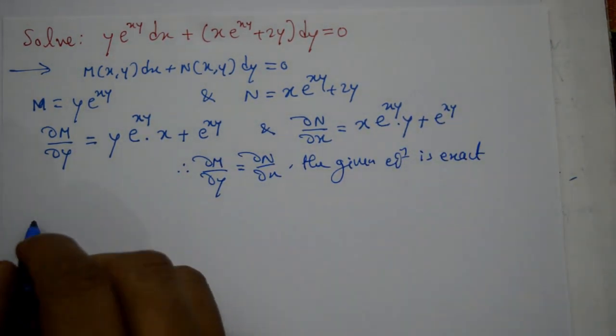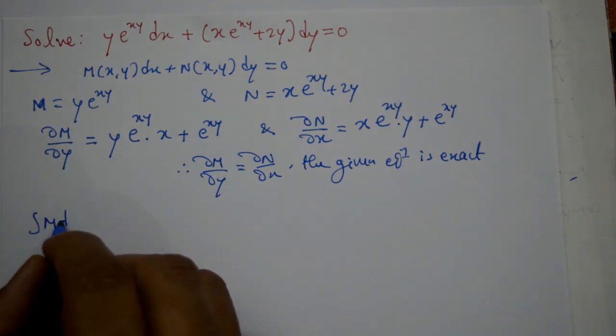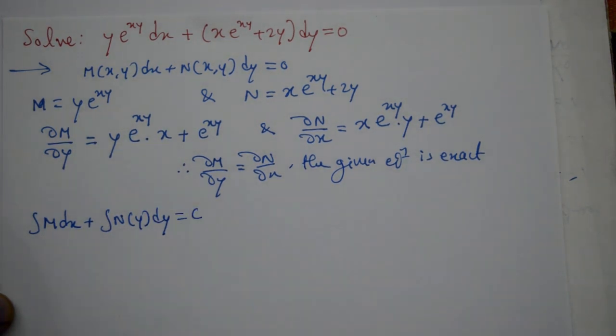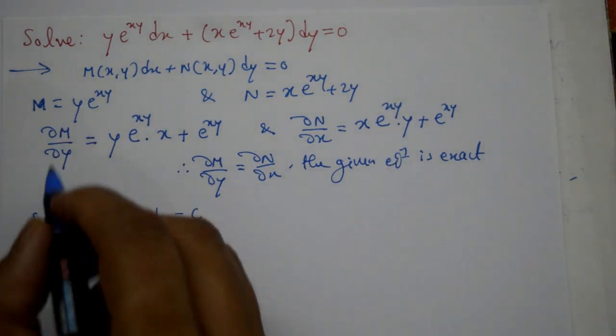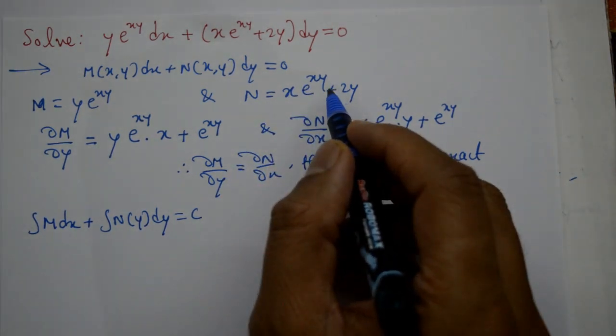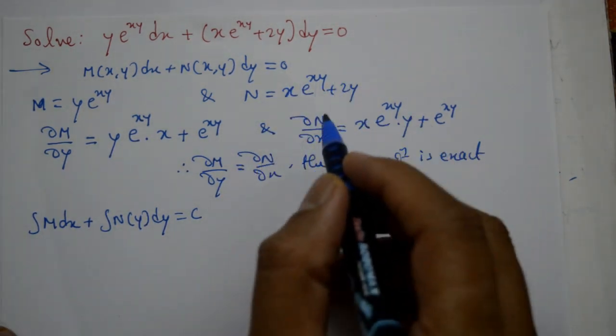If it's exact, then what do we do? Integration of m dx plus integration of n of y dy equal to c. So here we'll take, n of y means from n, the terms without x variable, we have to take only those terms.